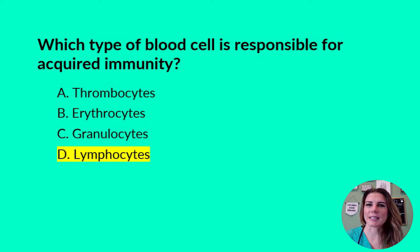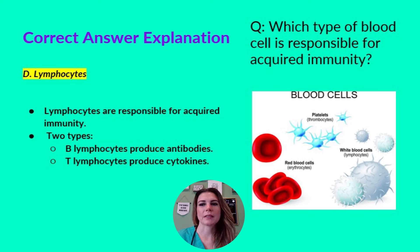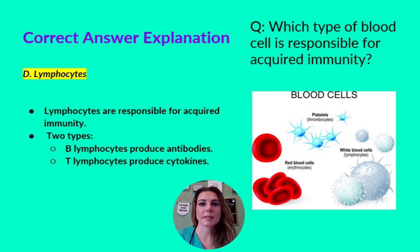The correct answer is D, lymphocytes. Let's discuss why this is correct and the other options are not. Lymphocytes are responsible for acquired immunity. It is important that you first know what acquired immunity is — a type of immunity that develops when a person's immune system responds to a foreign substance or microorganism, or that occurs after a person receives antibodies from another source. Acquired immunity is immunity you develop over your lifetime. It can come from a vaccine, exposure to an infection or disease, or another person's antibodies.